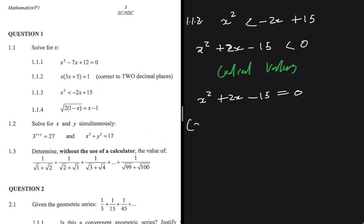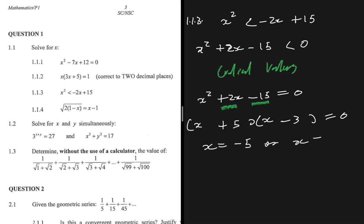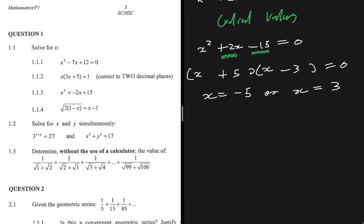We open two brackets and ask: which two numbers multiply to give minus 15 and add to give plus 2? That is plus 5 and minus 3. So we get x plus 5 times x minus 3 equals zero, giving critical values x equals minus 5 or x equals 3.